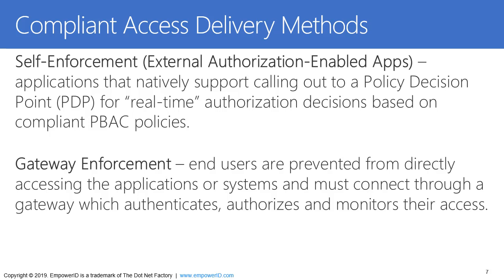A more common approach is gateway enforcement — putting some type of gateway in between the user and the systems they're trying to access. The gateway can mediate the user's access and act as an external authorization-enabled app. It can call out to a policy decision point to ask: can this user do what they're trying to do in this context, at this moment in time? Gateway enforcement adds that layer so users never directly access those systems. They only get mediated and authorized access, which can force pre-authentication and strong identity verification and multi-factor authentication.